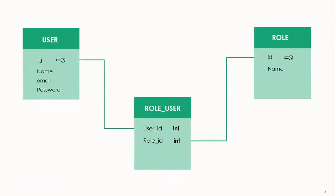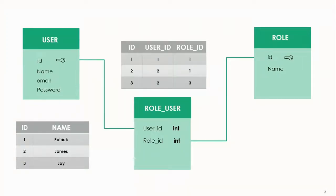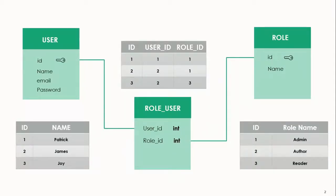Let's see how these roles are shared. Here we have the users table with some users, the pivot table called role_user, and the roles table which has some role names. We have a user called Patrick on the users table — his ID is one. On the pivot table, user ID is one and the role ID is one. If you check from the roles table, you'll see ID one is admin.